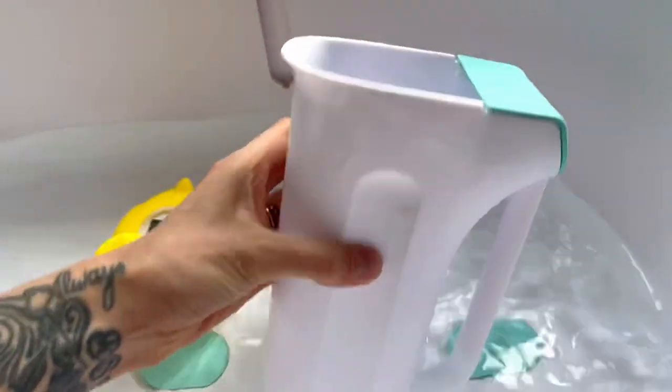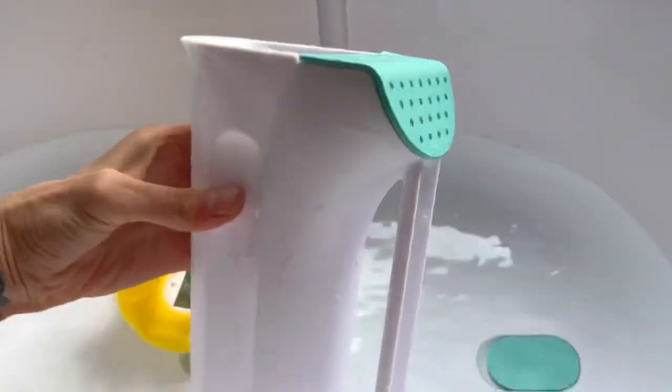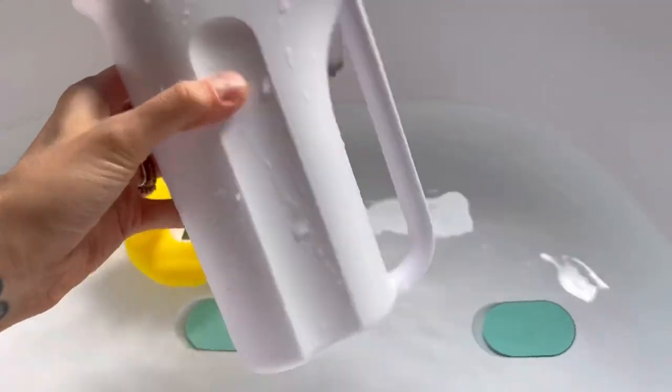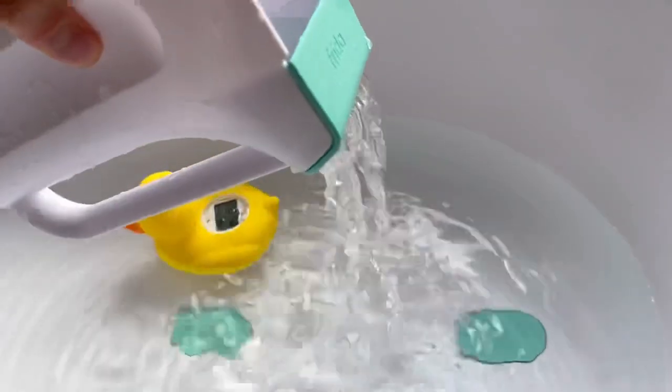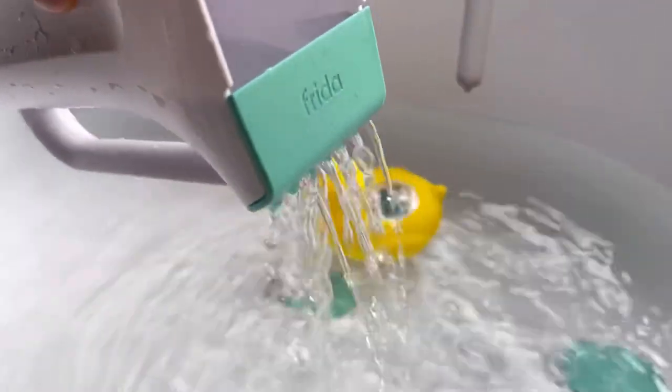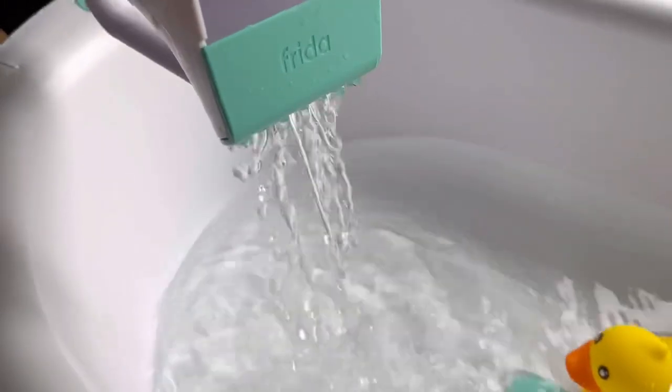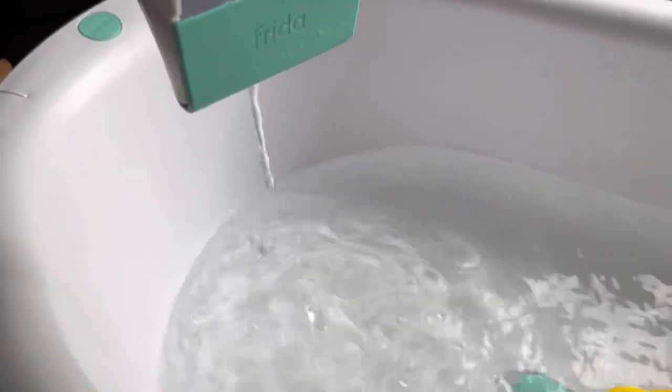One side has the rain option which comes out a lot lighter and it's easier for smaller babies to put the water over their head versus a heavy pour. You use the little indents to hold it on the side for this option and then you can switch it around and use the handle for the regular pour on the other side.